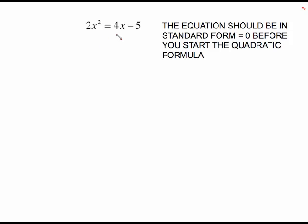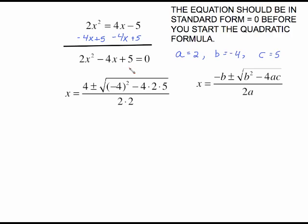Sometimes the equation starts out looking like this and here's a rule. The equation should be in standard form which means equal to zero before you start the quadratic formula. So we just need to do some basic manipulating. So track 4x and add 5 to both sides which gives us this. Besides it being equal to zero we would like this in descending order of exponents so that you name your a, b, and c correctly.